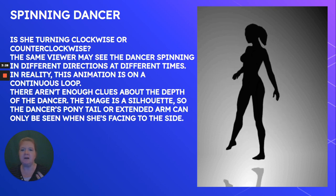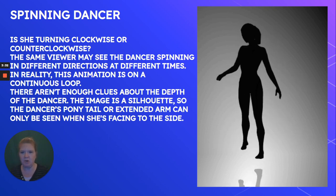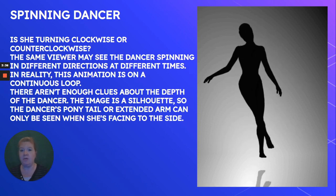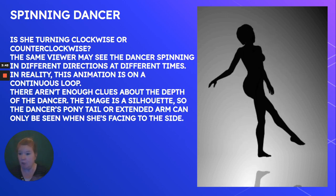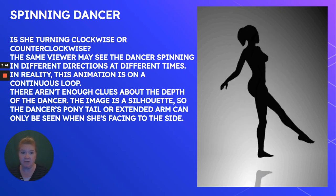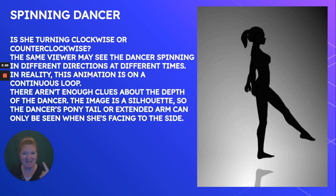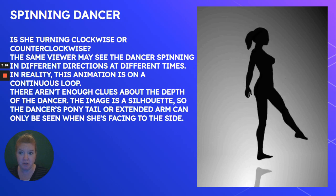The reason is there aren't enough clues about depth in the dancer, and the image is a silhouette, so the dancer's ponytail or arm can only be seen when she's facing to the side. This allows people to perceive it differently, or the same person to perceive it differently at different times. Are you one of the people that can switch her and cause her to spin clockwise or counterclockwise? If you are, teach me your tricks.